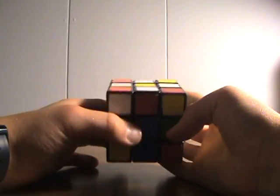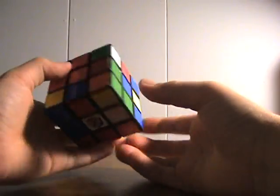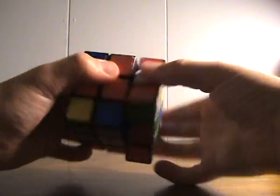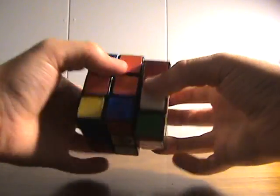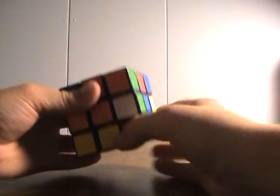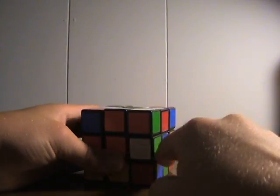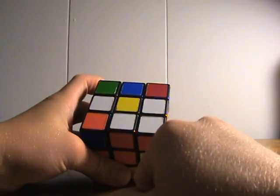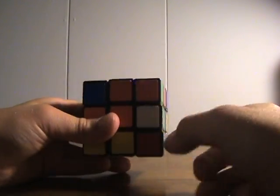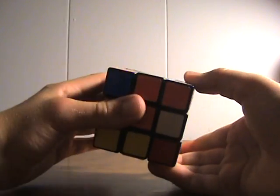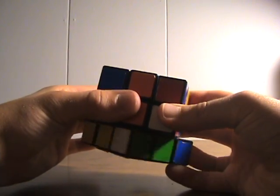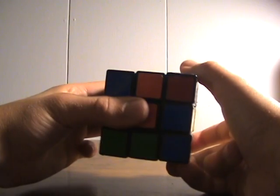Now, if you had your edge piece somewhere like this, where you have the white and green piece in between two other white pieces, then you're going to need to use this algorithm to get it out: R-I-D-I-R-D.